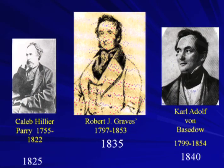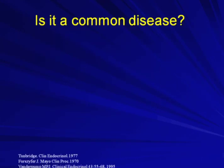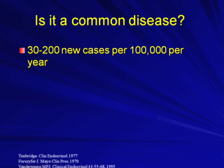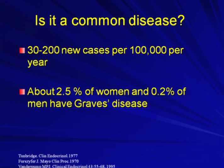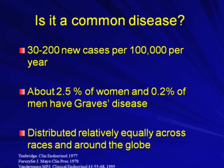Graves disease is not a grave disease — it's named after Robert Graves, who got the initial credit for describing this condition back in 1835, although there were other investigators who were very close. Is Graves disease a common disease? The answer is yes. There are approximately — depending on the study — between 30 and 200 new cases per 100,000 population per year. The prevalence is higher in females than males: approximately 2.5% of women and about 0.2% of men may have Graves disease.